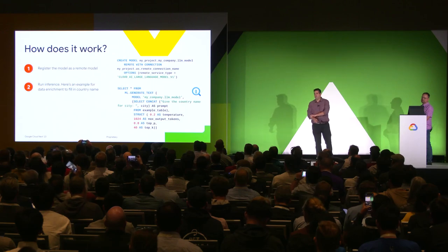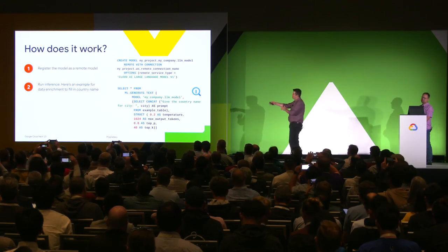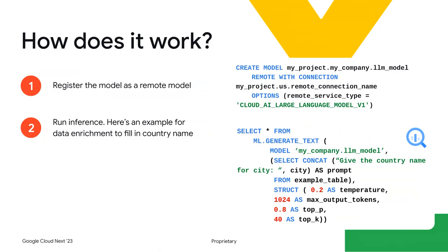When I say integrated with SQL, what does that actually mean? You come in and create a remote model that references a Cloud AI large language model V1 — that's PaLM today. Then you can run a SQL function to generate text: you give it the model name, and then a prompt along with any data you might have. In this example, I'm generating new data where I have a bunch of cities in a column, and I'm saying, give me the country for these cities — it'll generate new data useful for downstream analysis.